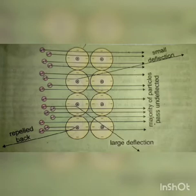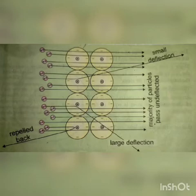Kuch particles deflect hue — kisi ne small deflection show ki, kisi ne large deflection show ki. Jabke bahut hi kam, very few particles repelled back — rebounds kiye, aur hum keh sakte hain ki wo bounced back ho gaye, wapas mur gaye.